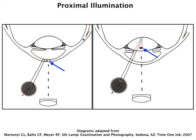The last technique in our toolbox is called proximal illumination, and this is where the light is shown not on the pathology, but right next to the pathology. It allows a diffuse light to spread over and highlight the pathology. You can use this for corneal opacities or corneal pathologies and in certain types of lens opacities.